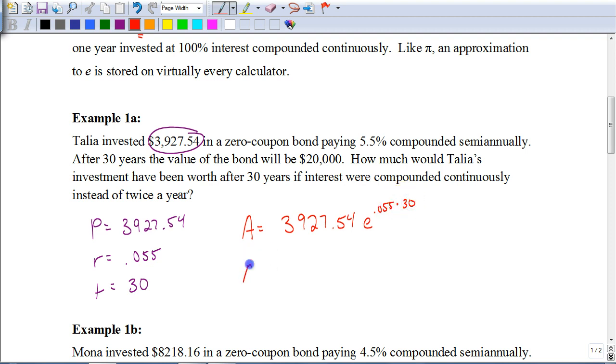And we would just type this in on our calculator as we see it. And when you do that, you get $20,450. And I'm sorry, I said that wrong. It's $20,450.62. There we go. That would be your answer.